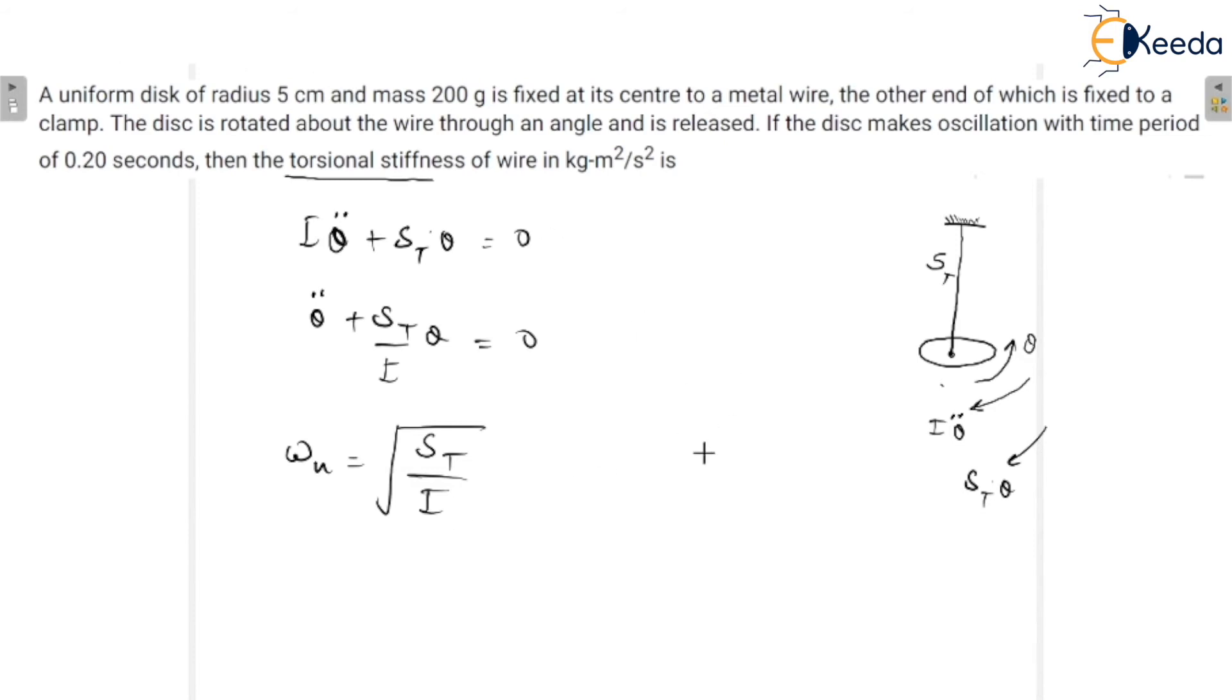That is why this is I. What is I? It is equal to moment of inertia. I is equal to m·r² by 2 for the disc. For the ring, it would be m·r², but for the disc, it is m·r² by 2.